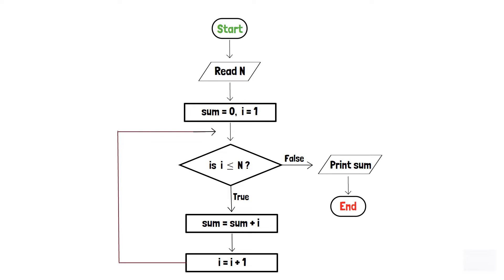So let's dry run the program to understand the workflow. Consider n is equal to 3. Initially, the sum will be 0 and i will be 1.